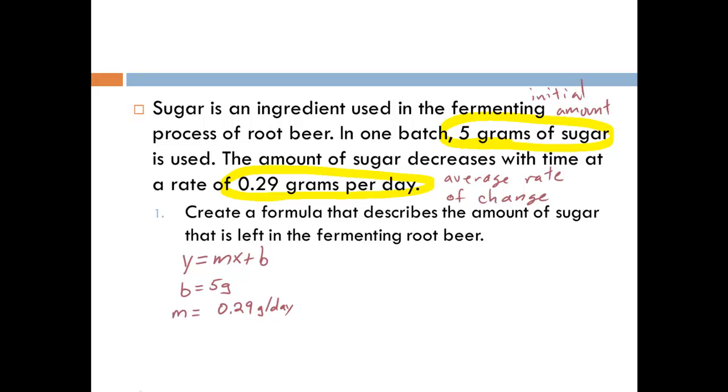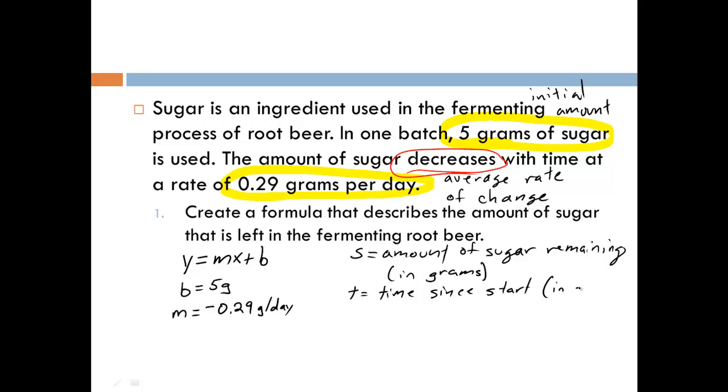We need to be careful here because we know that the amount of sugar is decreasing. That means that the slope, our average rate of change, is actually negative. Now we also need to define some better variables instead of just x and y. Let's use s to represent the amount of sugar remaining. And this is in grams, and we'll let t equal the time since the start. And this will be in days.